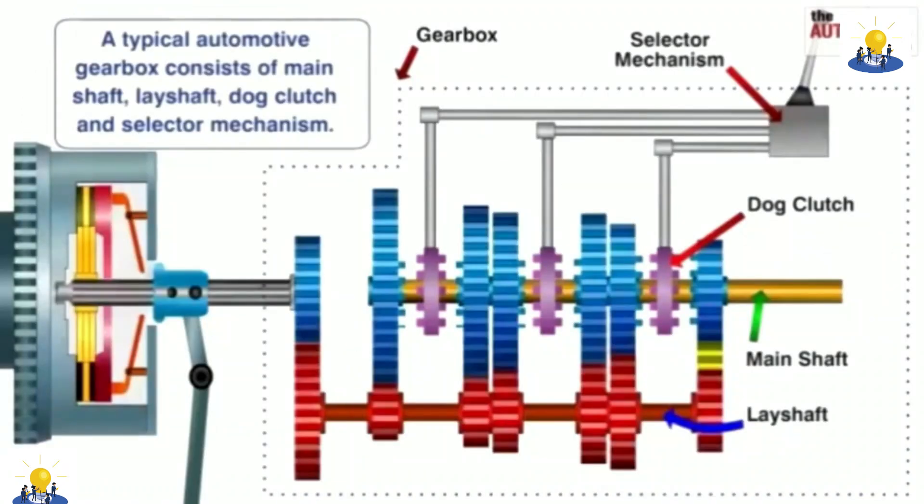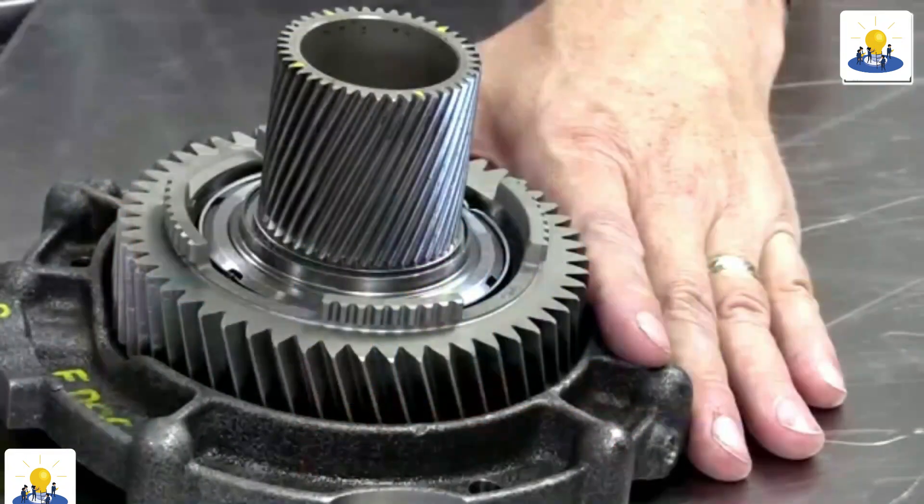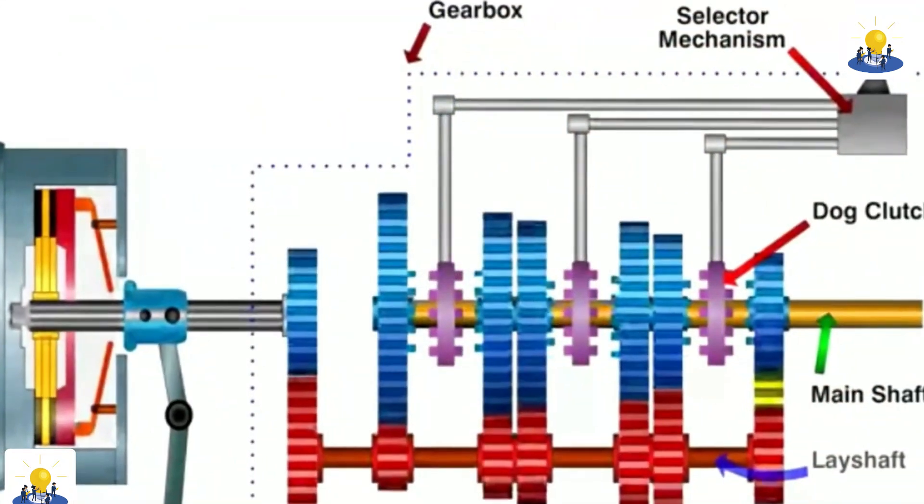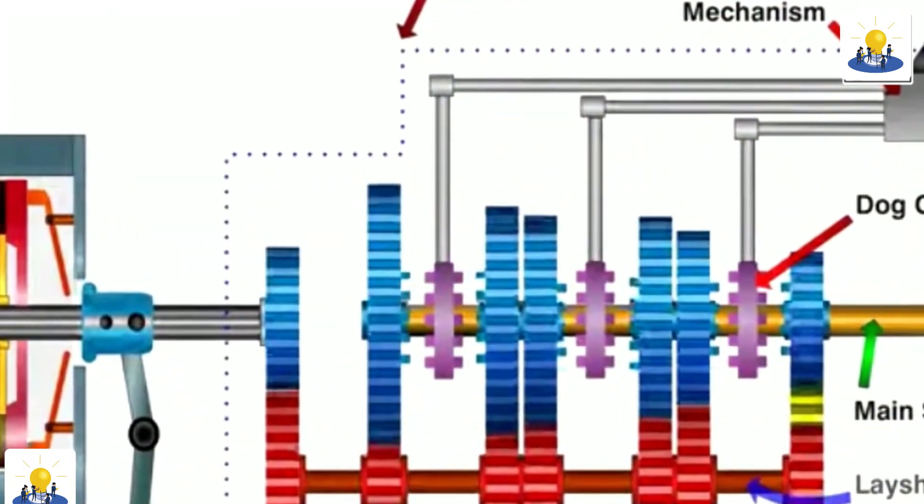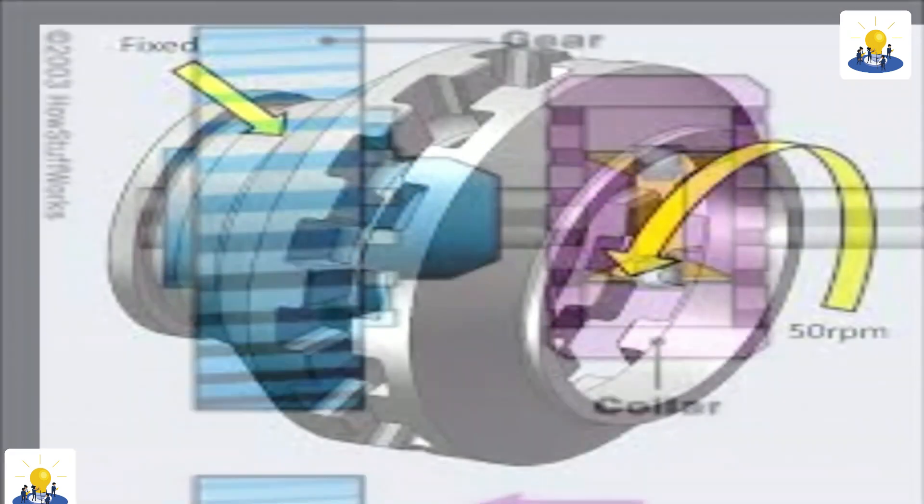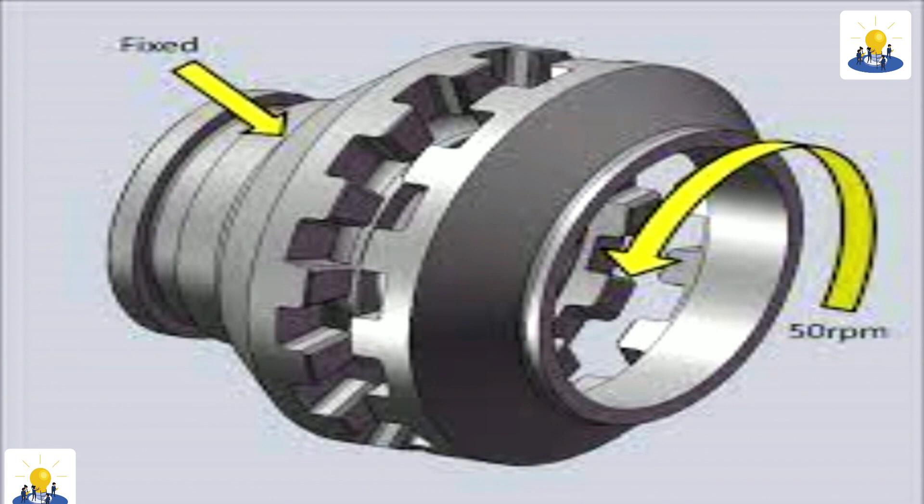When the driver selects a gear, the dog clutch for that gear is engaged via the gear selector rods, locking the transmission's output shaft to a particular gear set. This means the output shaft rotates at the same speed as the selected gear, thus determining the gear ratio of the transmission.